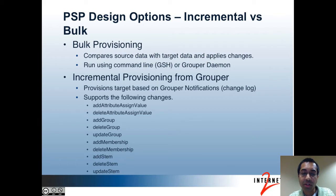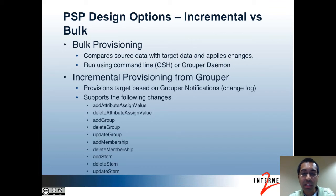I've listed the changelog actions that are supported by incremental provisioning in the PSP as of version 2.1. The action names clearly describe when a changelog event with that action is triggered. For instance, an add group event will happen when a group is added in Grouper. The add attribute assigned value and delete attribute assigned value events happen when attribute values are added or removed from an object in Grouper, using the newer style attribute framework. The update group and update stem events happen when a Grouper folder description is updated. In many cases, it may make sense to have both incremental and bulk provisioning setup — incremental will give you quick updates, and bulk will make sure that things stay in sync.